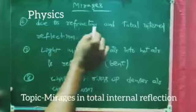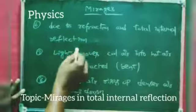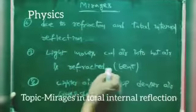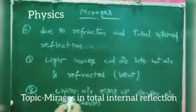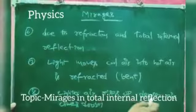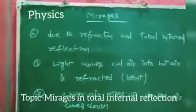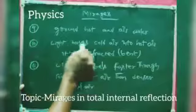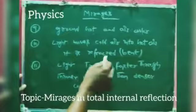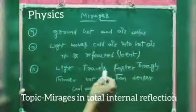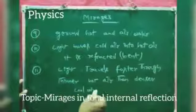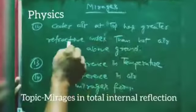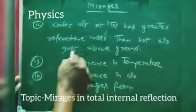Sixth point: due to refraction and total internal reflection. Seventh point: light moving from cool air into hot air is refracted — that means bent. Eighth point: lighter air rises up and denser air comes down; ground is hot and air is cooler. Light moving from cold air into hot air is refracted and bent. Light travels faster through thinner hot air than denser cool air.